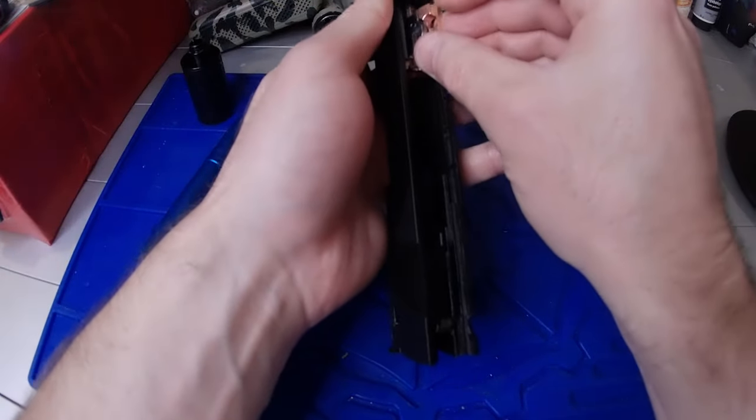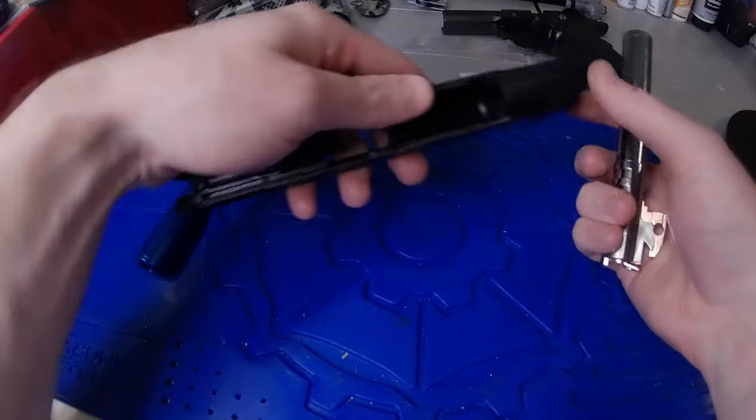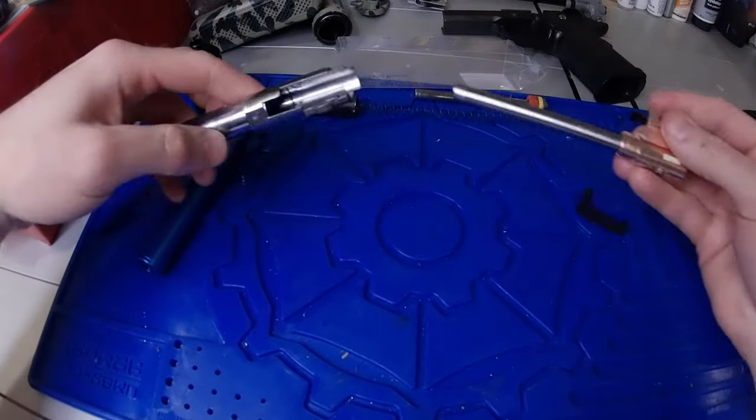Slide the inner barrel and outer barrel out the front of the upper together. Remove the inner barrel by twisting or gently prying if you need to, if it's too tight.